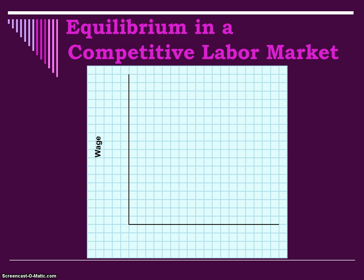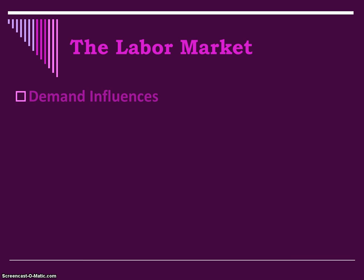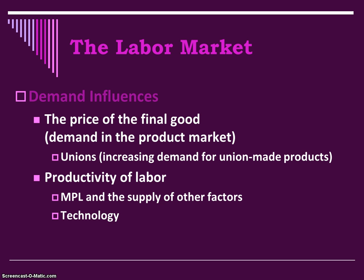In a competitive labor market, the supply and demand graph shows demand for labor from businesses and supply of workers, with the equilibrium wage where supply equals demand. Several things may influence demand for labor. One is the price of the final good or demand in the product market — because demand for labor is derived from demand for the final product, as the price of that final good fluctuates, demand in the labor market fluctuates as well. Unions play a big role in increasing demand for union-made products through advertising and public opinion, encouraging the quantity of labor demanded to also increase.